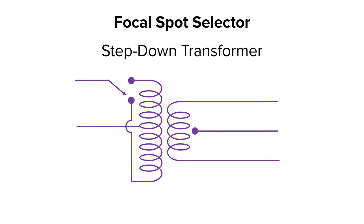Most x-ray tubes have two filaments. They're represented on the control console by the large focal spot and small focal spot selections.